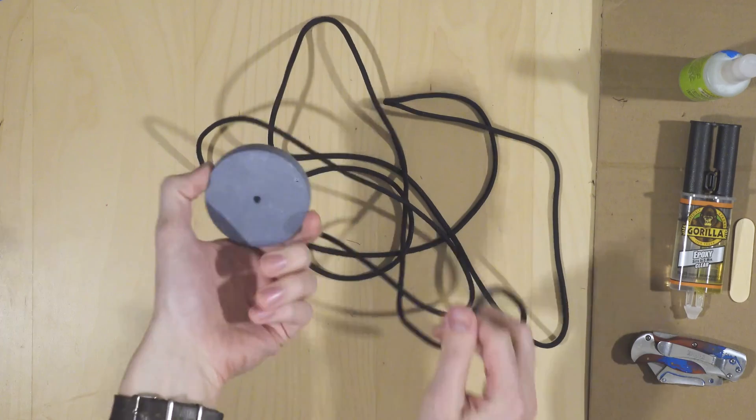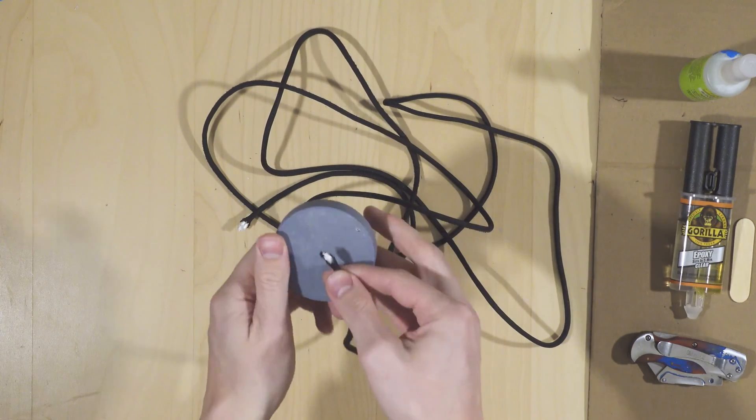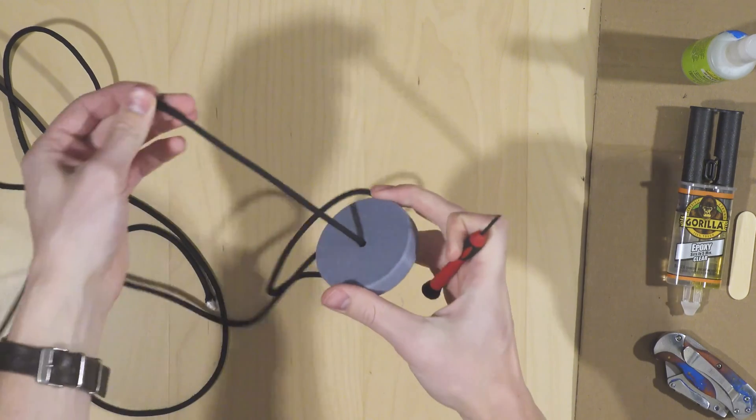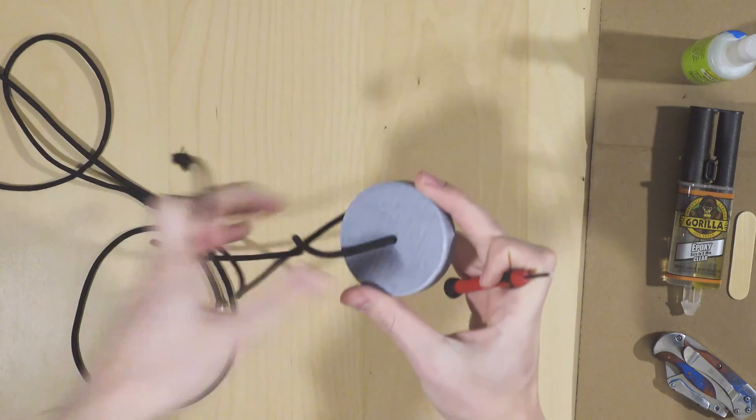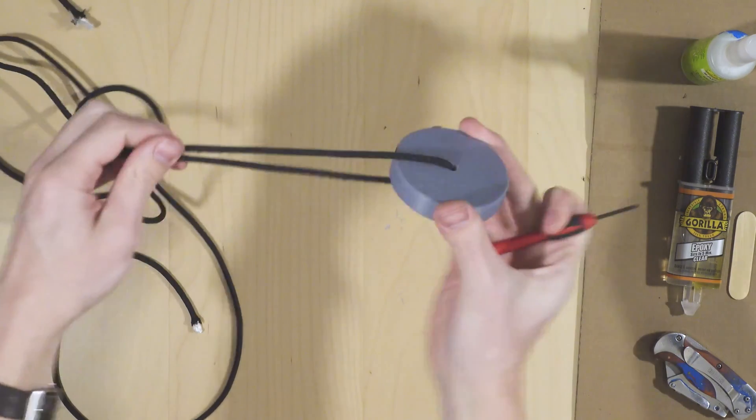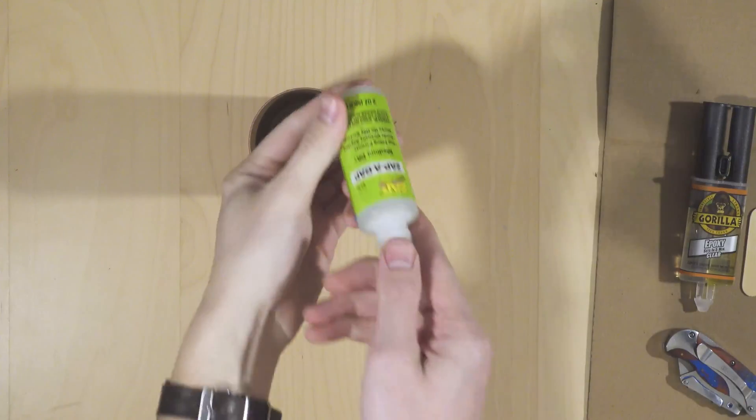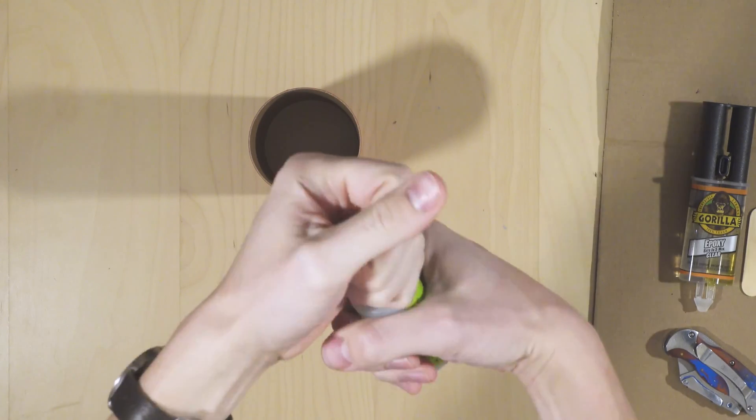Before epoxying the piston head to the piston, we'll thread the shock cord or webbing through the center hole. If you're building your own system, this part doesn't have to be entirely airtight, but it should be pretty close. I'll use some medium CA here to clamp the piston down onto itself.